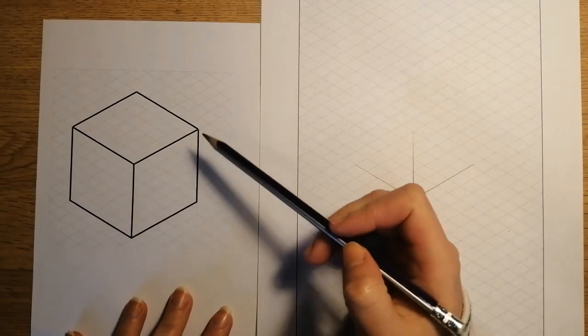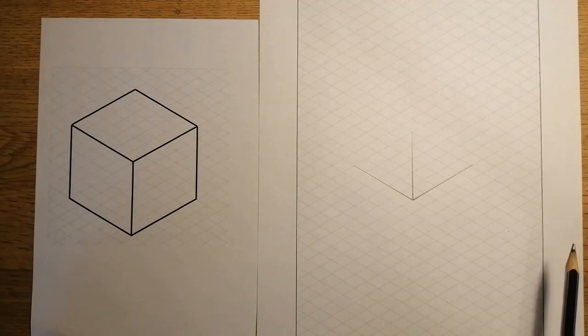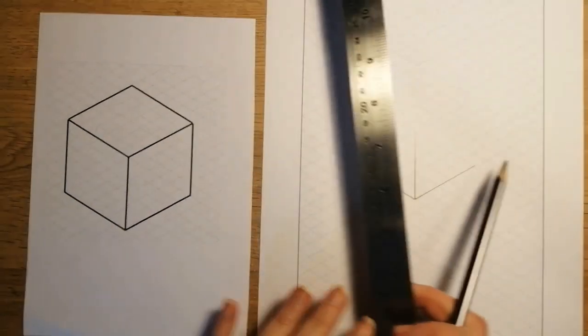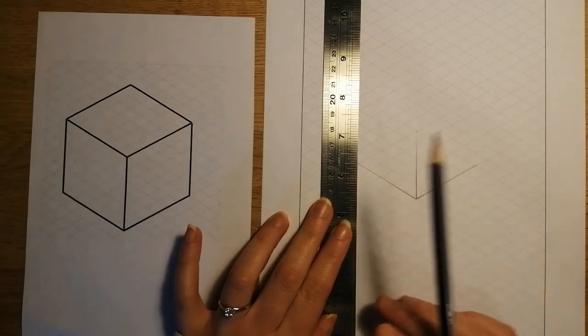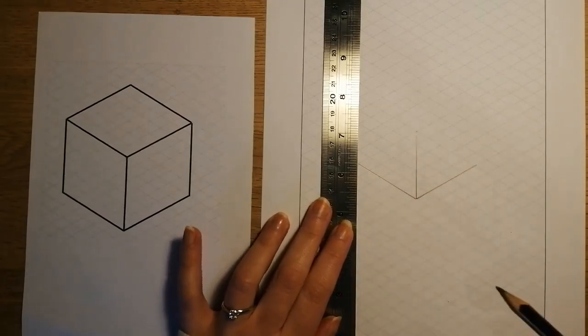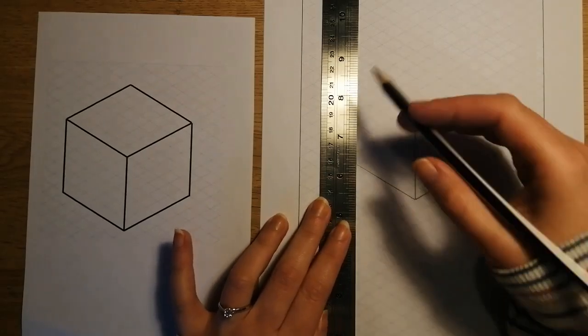Next up, I'm going to draw these two sides. So they're the furthest away pieces of my cube. I'm going to line up my ruler in the same way that I did for this central vertical line. And again, because it's a cube, the sides are all even lengths and widths. So it's five diamonds.